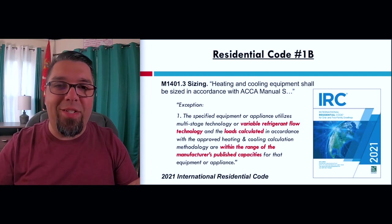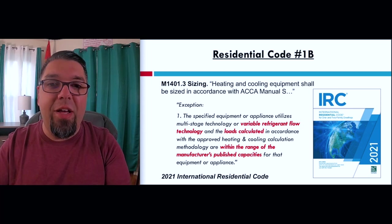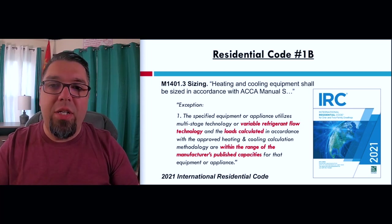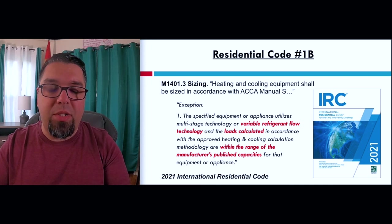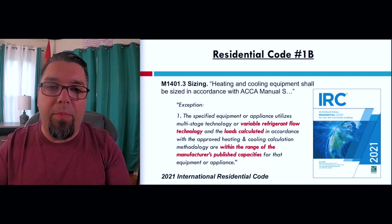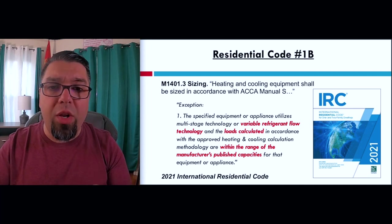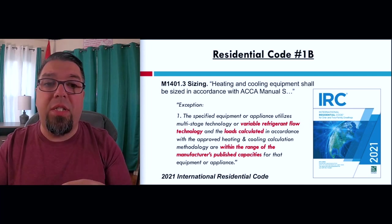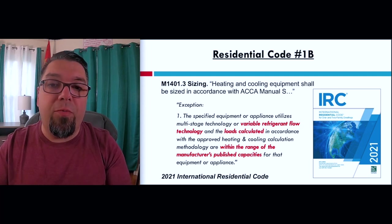So that was 1A — the requirement to size your system correctly. Now we're talking about 1B, equipment selection. The note in that piece says heating equipment shall be sized in accordance with ACCA Manual S, meaning re-rating the systems at your design conditions to show that it actually meets the load requirement. One of the code's exceptions in the IRC dating all the way back is the exception for variable refrigerant flow technology.